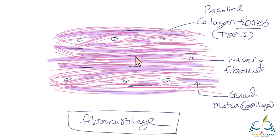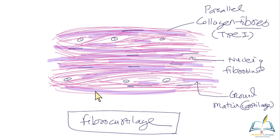You also see fibrocytes or fibroblast nuclei in a linear fashion — spindle-shaped elongated nuclei — alongside the round nuclei of chondrocytes, which are scanty. The abundance of collagen type 1 fibers is a classical feature. Many people confuse this slide with tendon, but in tendon you cannot observe chondrocytic nuclei and there is no cartilage matrix. Remember fibrocartilage does not possess any perichondrium. This cartilage is considered a transition between dense connective tissue and cartilage, or even between bone and cartilage.